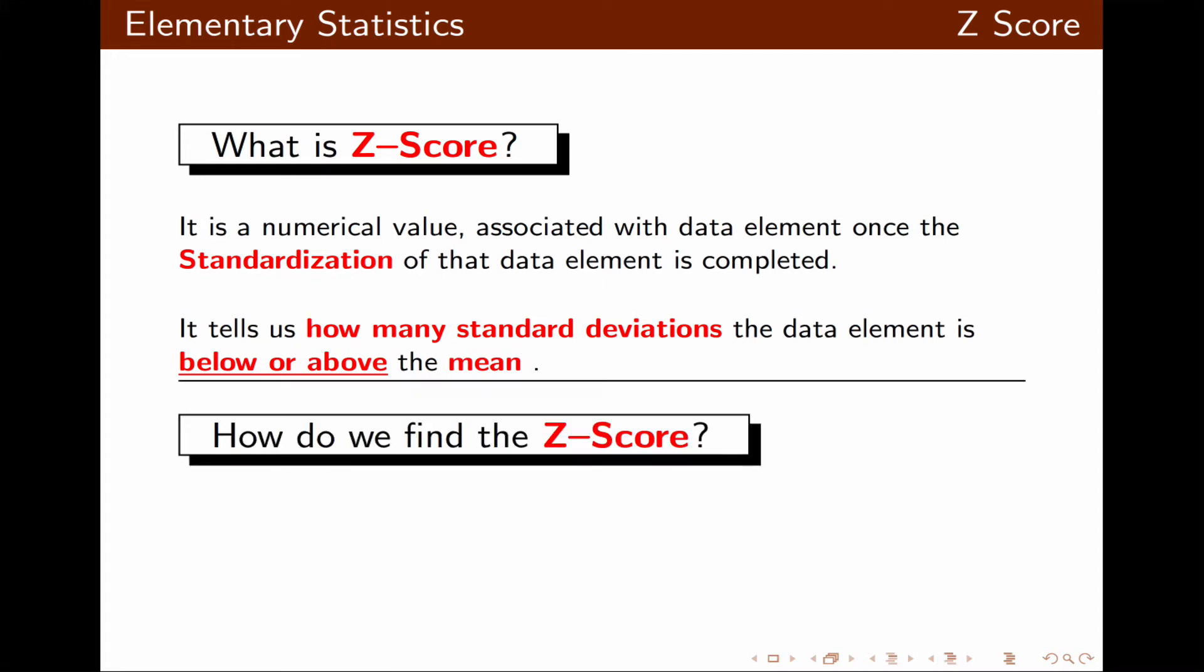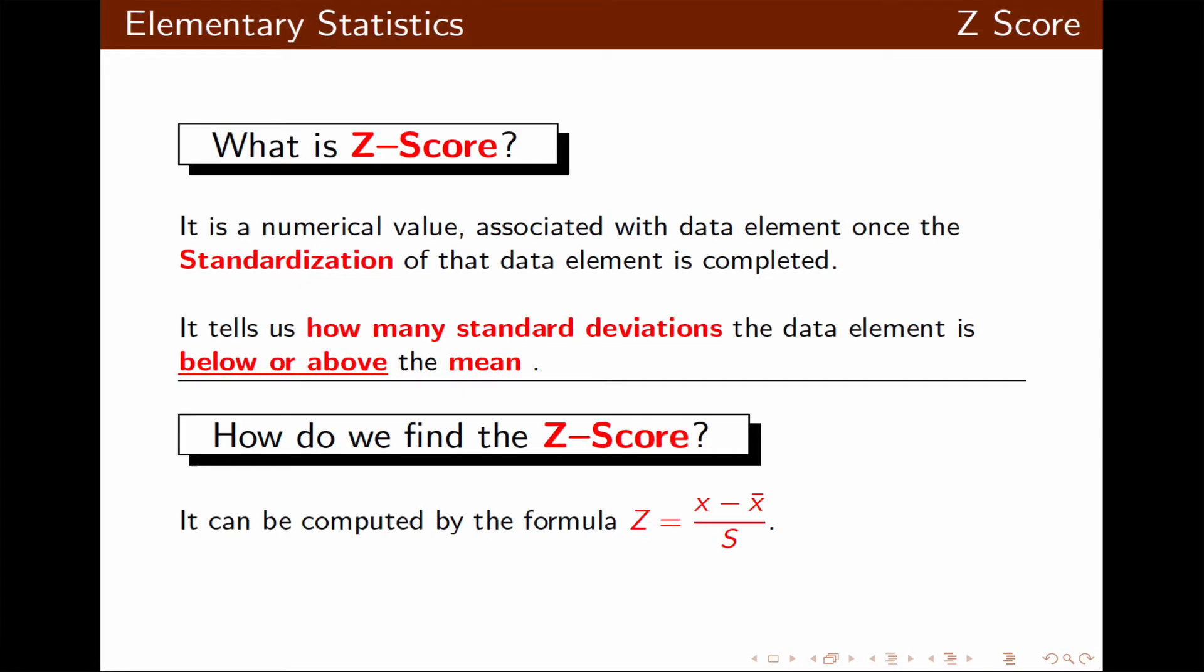How do we find the z-score? It's a very easy formula. The z-score is x minus x-bar divided by s. If the result of this calculation is more than three decimals, it's highly recommended to round it to three decimal places.